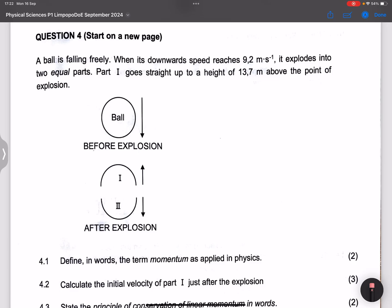All right, now we start with question number four. So they say to us, we've got a ball that is falling freely when its downward speed reaches 9.2 meters per second. It explodes into two equal parts.